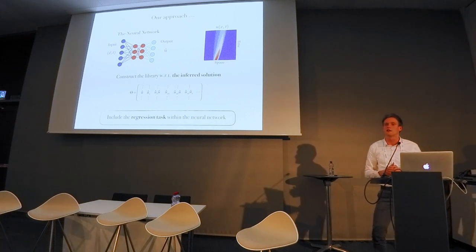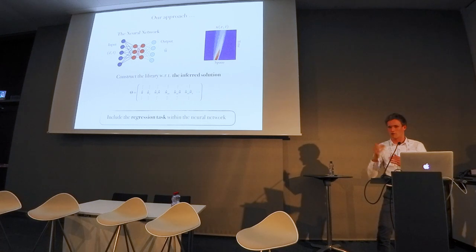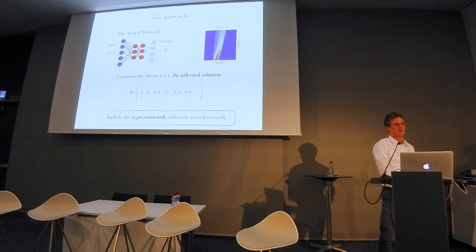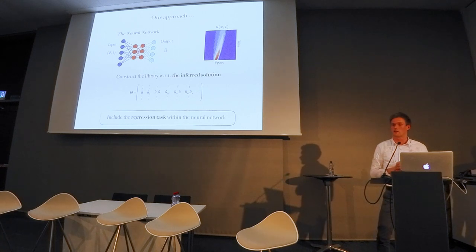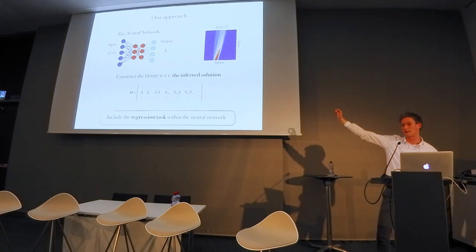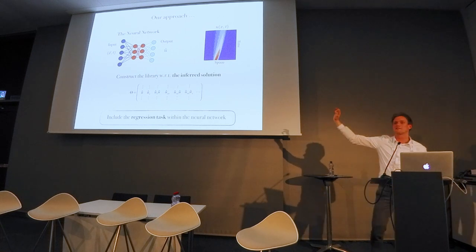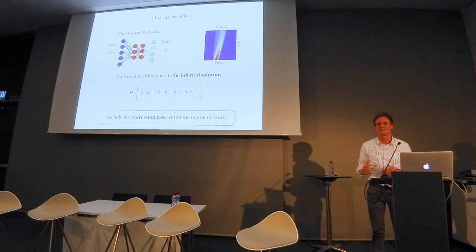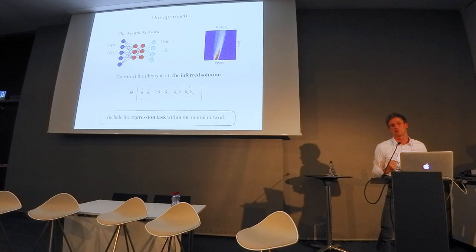Alternatively, what you can do, which is the physics-informed neural network, the PINs, is if you know which terms feature in your equation, you just build a library with only these terms, and then you can use this to fit your equation to the data. But in this case, it's model discovery, so you try to find your underlying model. It's crucial that your model is somewhere in your library. This is one of the obvious limitations: if the right equation is not in your library, it will either not converge or give you wrong results.